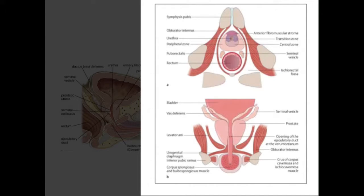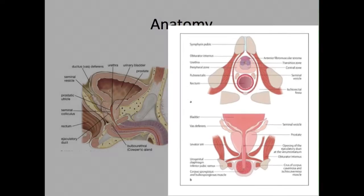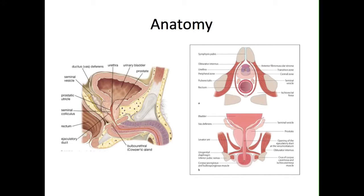Whilst prostate malignancies tend to occur in the peripheral zone. The prostate gland is supplied by prostatic branches of the internal iliac arteries, whilst veins from the gland drain into the prostatic venous plexus, which in turn drains into the internal vertebral venous plexus.